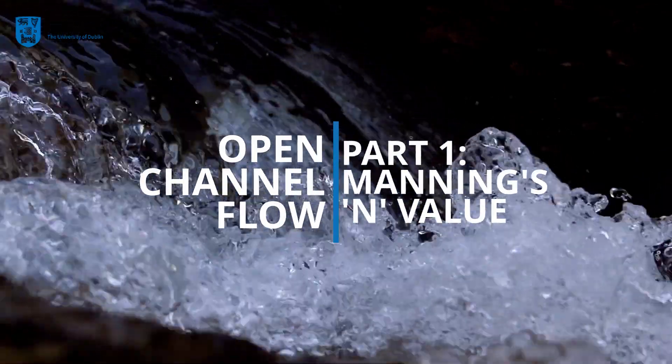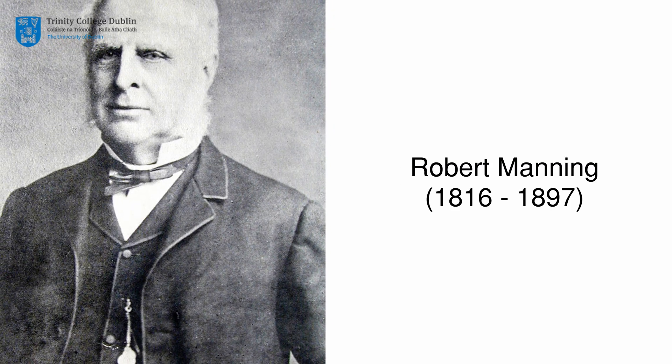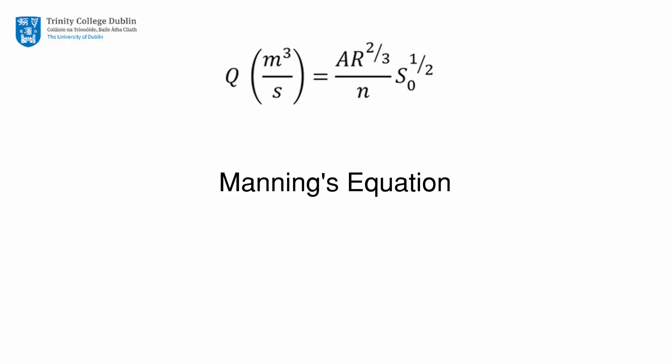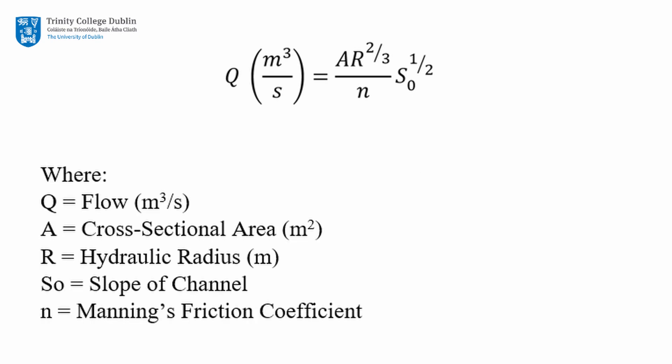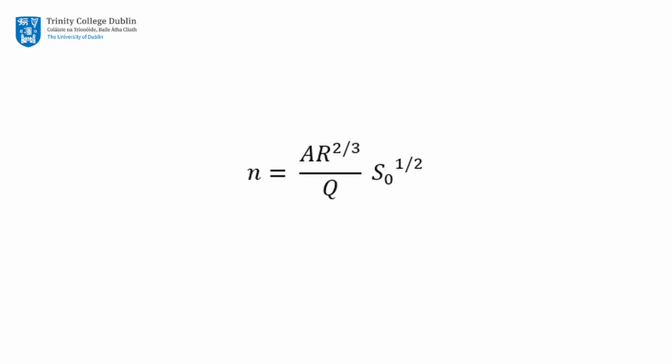Part 1: Manning's Friction Coefficient. In 1890, Robert Manning, an Irish engineer, developed an empirical formula to estimate the average velocity of a fluid flowing in an open channel. This equation relates the flow rate in a channel to the cross-sectional area, hydraulic radius, slope and Manning's friction coefficient, n. In this experiment, we will rearrange the Manning equation in order to determine the n coefficient.